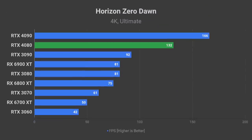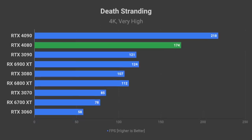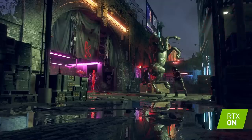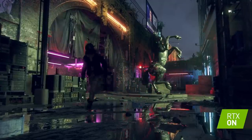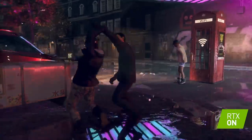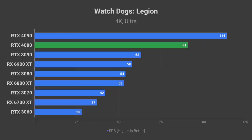Shadow of the Tomb Raider is a perfect example of how you should be able to play AAA games from the past couple of years on the highest quality preset at above 100 FPS in 4K. That includes Horizon Zero Dawn at 132 FPS average, and Death Stranding at 174 FPS. Watch Dogs Legion is another AAA game that even flagship cards struggle to run at ultra preset in 4K, but with the RTX 4080 it should not be a problem, with over 90 FPS average.